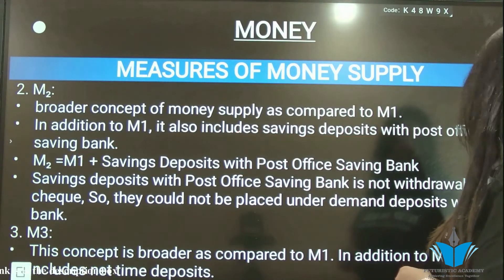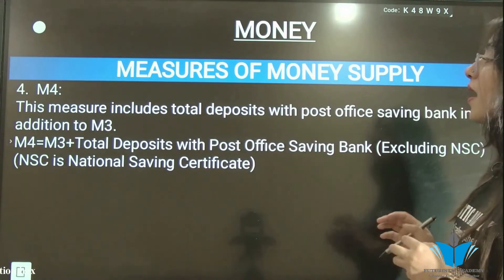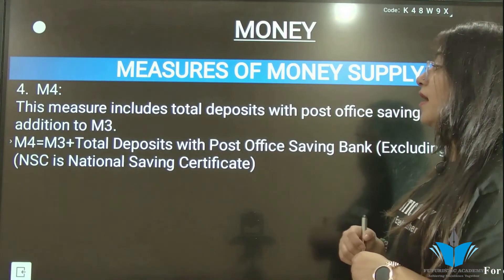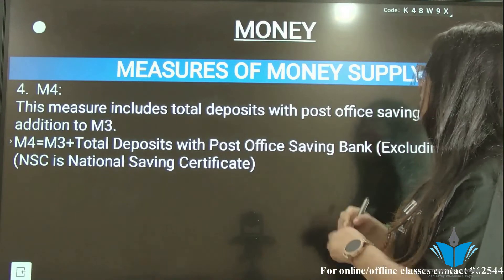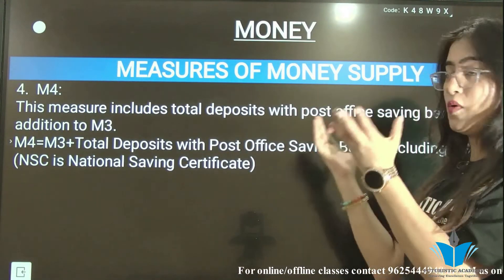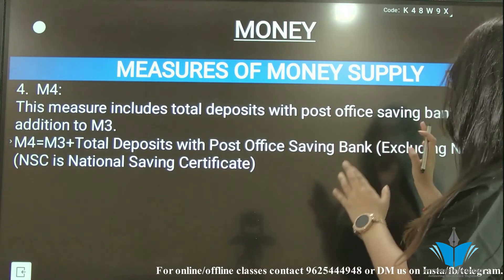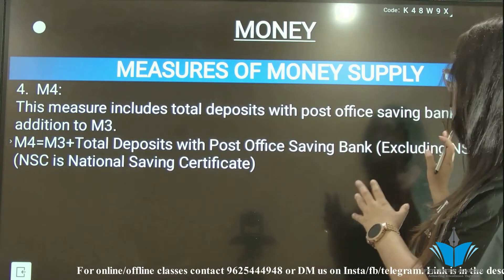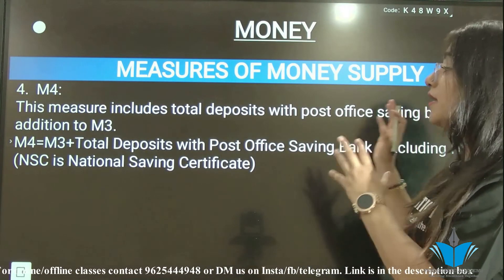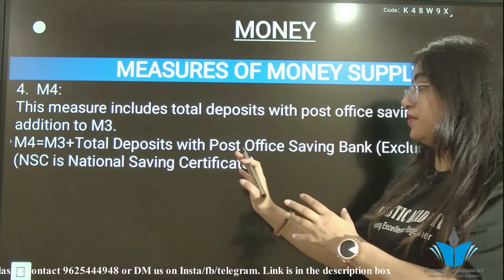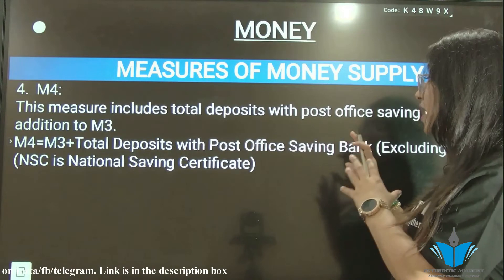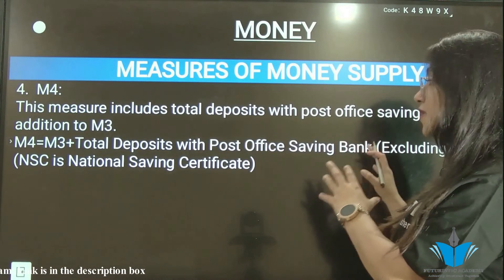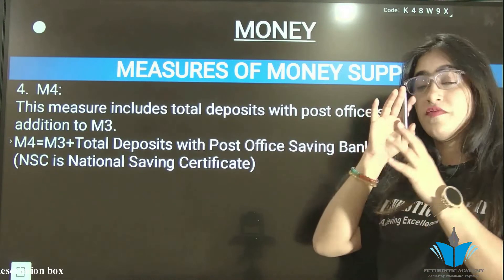Moving to M4 — in this measure, total deposits with post office saving banks are also included in addition to M3. So M4 includes M3 plus total deposits with post office saving banks, excluding NST (National Savings Time deposits).